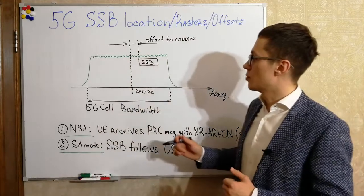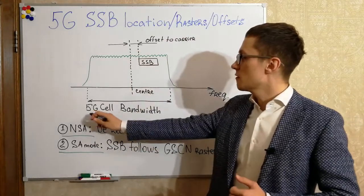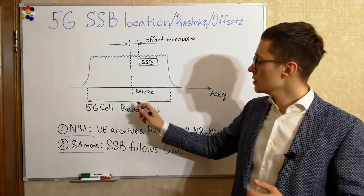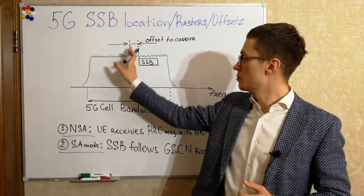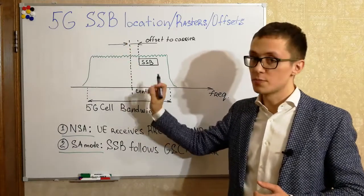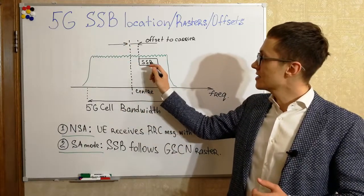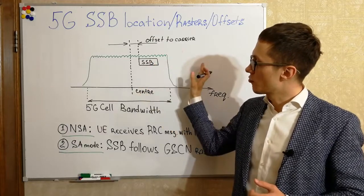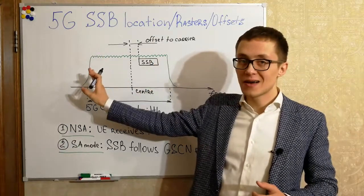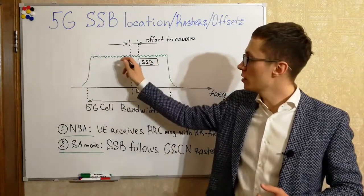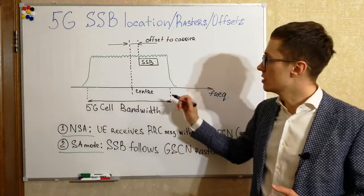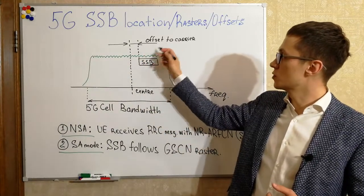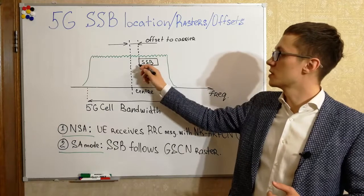Now let's look at my example. Here is the 5G cell bandwidth and here is the center of that bandwidth. The SSB block can be located from the right side, from the left side, or at the center. There are some offsets to the carrier center.